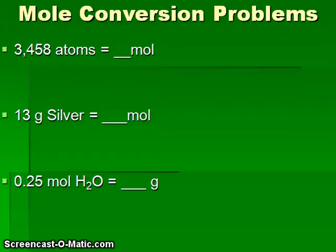Next, let's try some mole conversion problems. In these three problems, you will first attempt to convert from number of atoms to moles, then from number of grams of silver into moles of silver, then from moles of water into grams of water. Let's look at a tool that we can use to help us determine how to do these types of calculations. I like to call it the mole bucket.